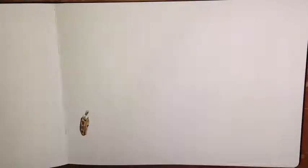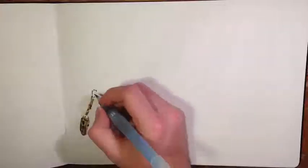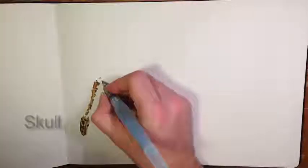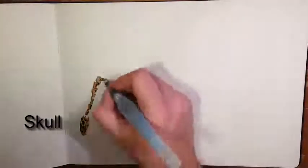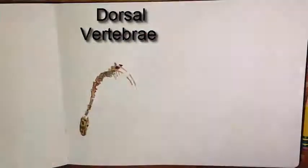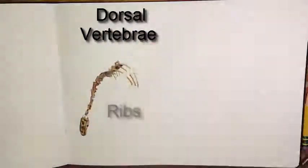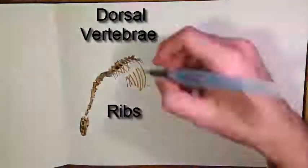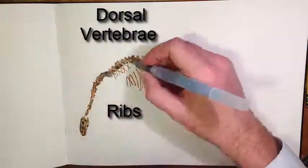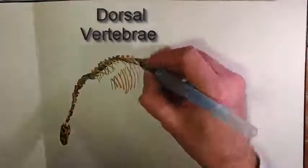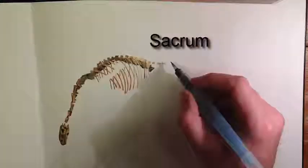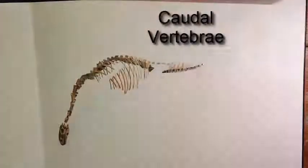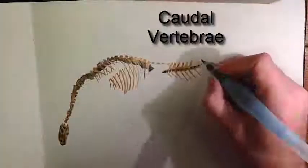I am going to quickly sketch a rather complete Plateosaurus skeleton, starting with the skull, and then the cervical vertebrae, dorsal vertebrae with ribs extending down and closing the chest and abdomen, the sacrum, and finally the caudal vertebrae that form the tail.